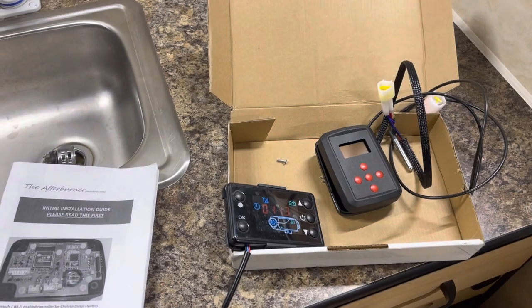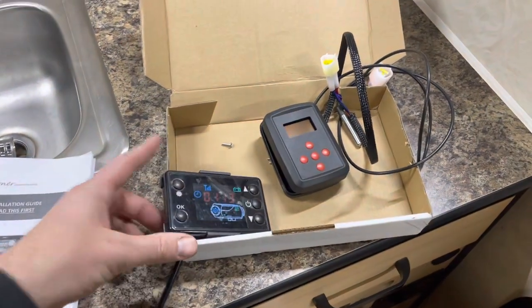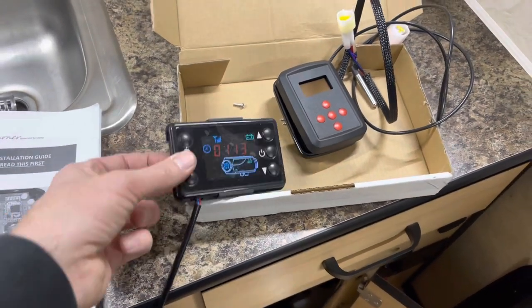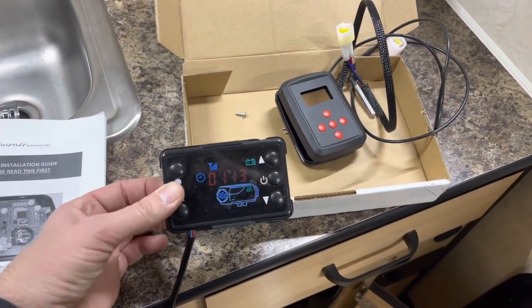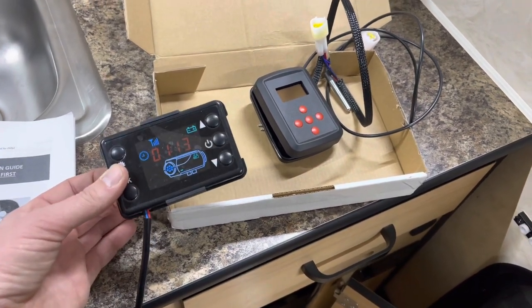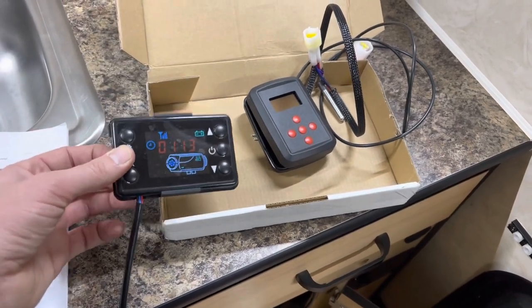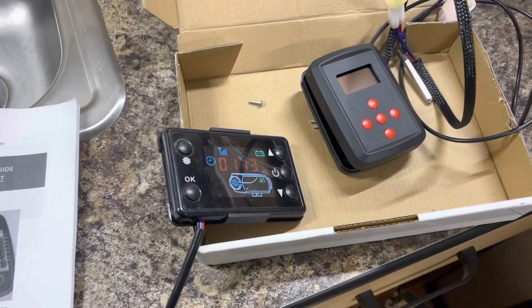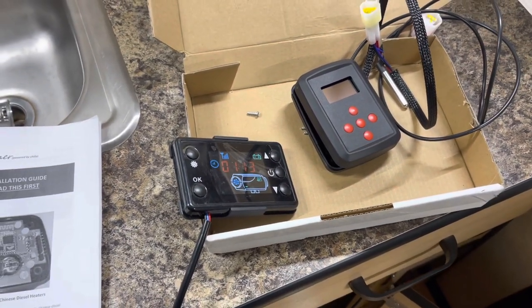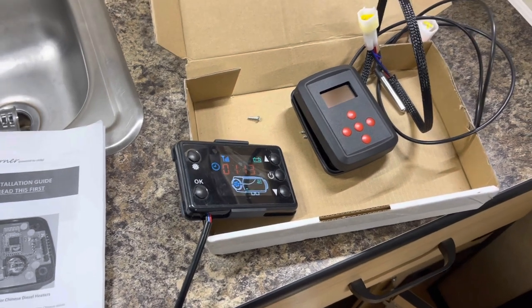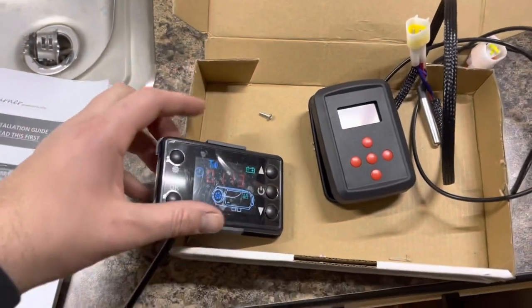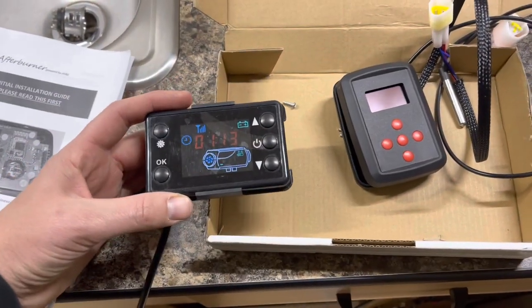In this video, I'm going to talk about the Afterburner controller to control Chinese diesel heaters. The problem with the factory Chinese diesel heater is temperature control. There's ways to control them a little bit better using the factory remotes. There's a bunch of different types of remotes to control these diesel heaters, but one issue is they don't cut the heat off at the appropriate temperature or get them to burn low enough to where it doesn't roast you out at night, even when you have these set on the lowest settings.